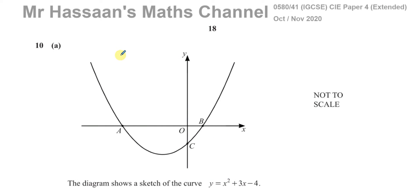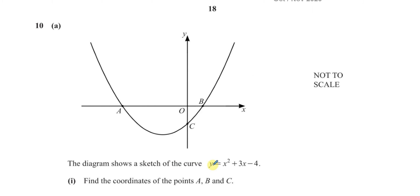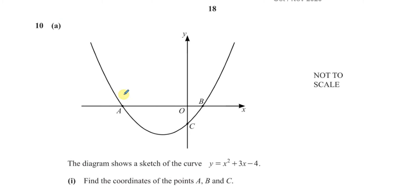Welcome back. This is Mr. Hassan's Math Channel and I'm now answering question number 10, part A from the November 2020 International IGCSE paper for variant 1. Part A is about a graph which is a quadratic. The equation is given: y equals x squared plus 3x minus 4. We are asked to find the coordinates of points A, B, and C — the places where the graph crosses the x-axis and the y-axis.